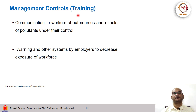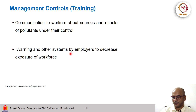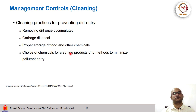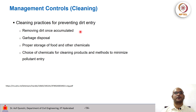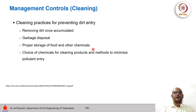Workers can also be trained. One can communicate to workers about sources and effects of pollutants under control, and have a system of warnings and other systems by employers to decrease workforce exposure. One can also use good cleaning practices for preventing entry of dirty air — remove dirt once accumulated, have proper garbage disposal, good storage of food, good storage of other chemicals, and use a good choice of chemicals for cleaning products so that we can reduce VOCs. That basically means methods to minimize pollutant entry.